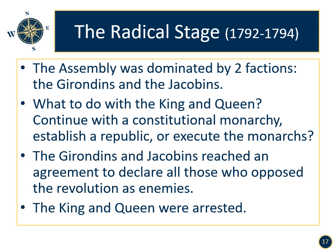The radical stage of the revolution, 1792 to 1794. The Assembly was dominated by two factions: the Girondins and the Jacobins. A third group, the Constitutional Monarchists, were losing power. Questions arose for the National Assembly: what to do with the King and Queen — continue with the Constitutional Monarchy, establish a Republic, or execute the monarchs? The Girondins and Jacobins reached an agreement to declare all those who opposed the revolution as enemies. The King and Queen were then arrested and brought to Paris. The Girondins saw the revolution as universal, as something that should spread to other countries, and were not as radical as the Jacobins. The Jacobins were radicals led by Maximilien Robespierre, who felt this was only the start of the revolution and that further violence was needed to bring about more change.